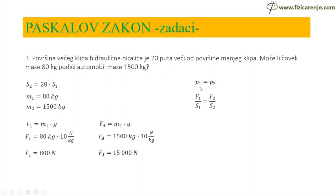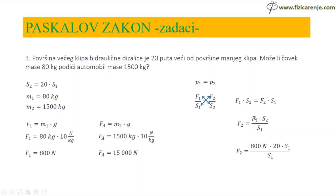P1 je jednako P2. Umjesto P1 pišem F1 kroz S1, umjesto P2 — F2 kroz S2. Unakrstnim množenjem dobijam F1 puta S2 je jednako F2 puta S1. Iz ovog obrasca treba da dobijem čemu je jednako F2. S1, kada pređe na drugu stranu, delit će. F2 će biti jednako F1 puta S2 kroz S1. Umjesto F1 pišem 800 N, umjesto S2 — 20 puta S1, a dole prepišem samo S1.